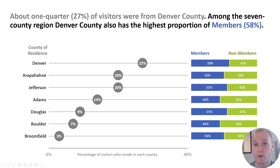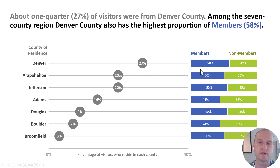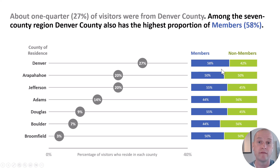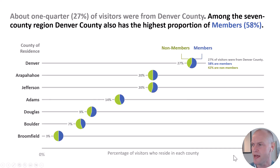The next option was this way, which I thought was the one everybody would like. We did the dot plot again to show the percentage of visitors from each county, and then within each county we have the percent member and non-member. I thought this was much easier to understand at first glance and assumed everyone would prefer it.